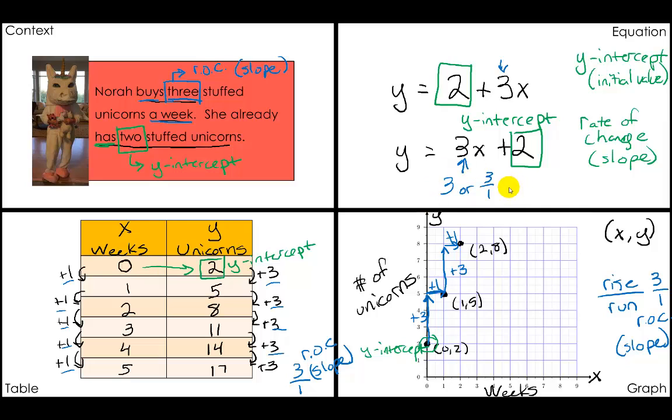That is our rate of change or our slope. And so in our equation, we just look and can pull these numbers out given that the rate of change or our slope is the number with the x and the y-intercept is the number by itself.